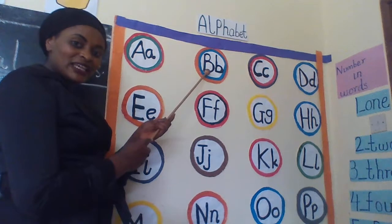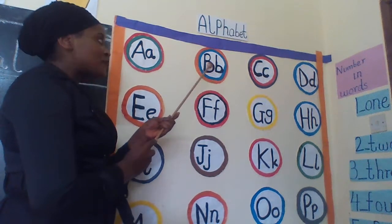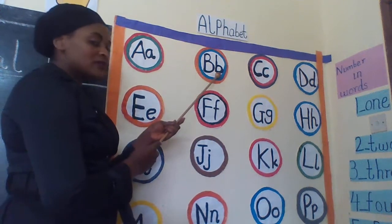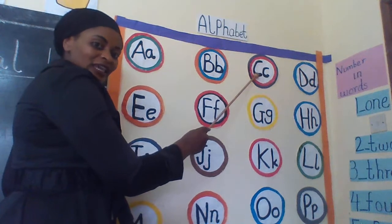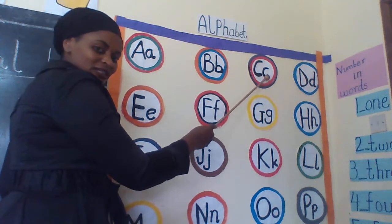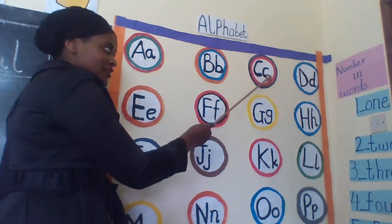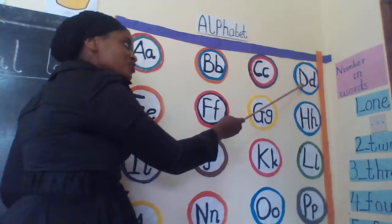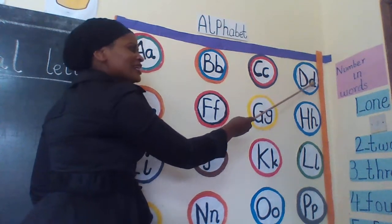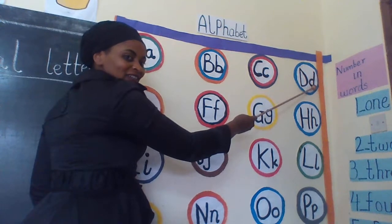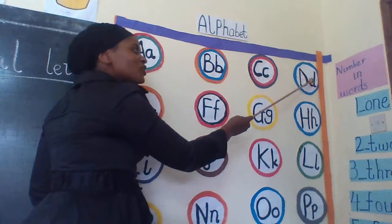Capital letter B, small letter B. Capital letter B, small letter B. Mayla, can you repeat after me? Say after me: capital letter B, small letter B.